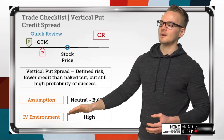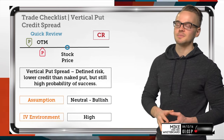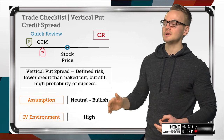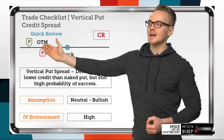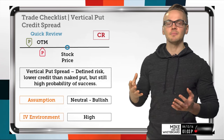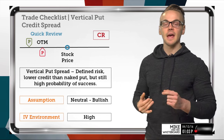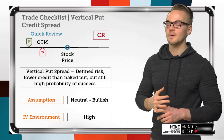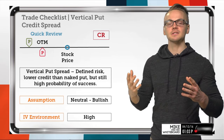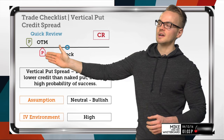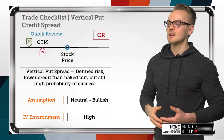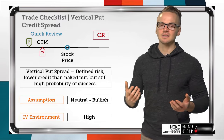We want the implied volatility environment to be high. The higher the implied volatility, the more credit we collect, even accounting for the cost of the long option. A high IV environment also lets us move our strikes much further out of the money and still collect around the same premium as we would closer to the stock price in a low volatility environment.